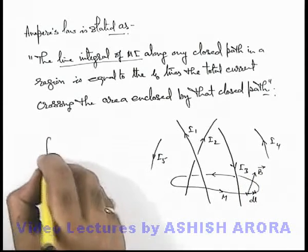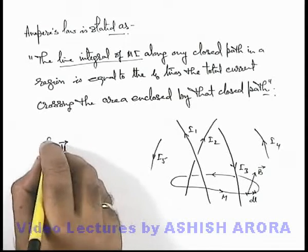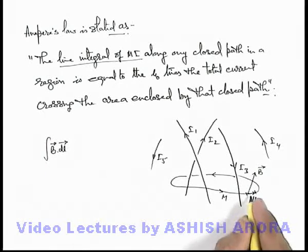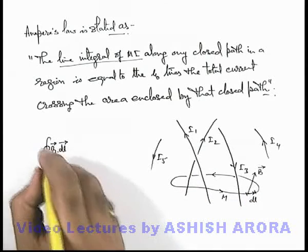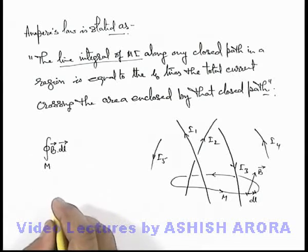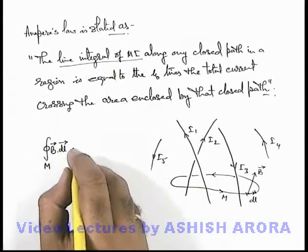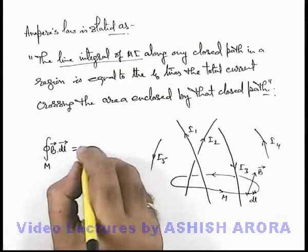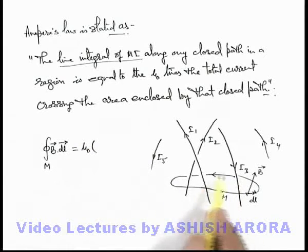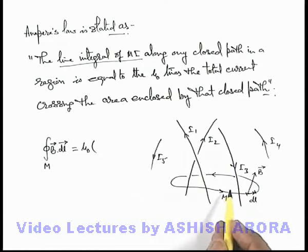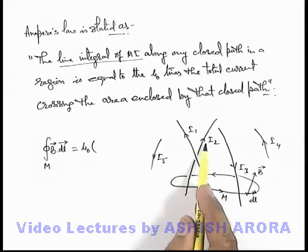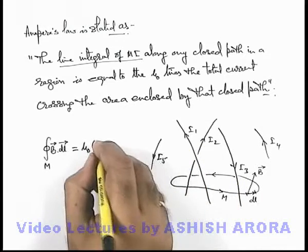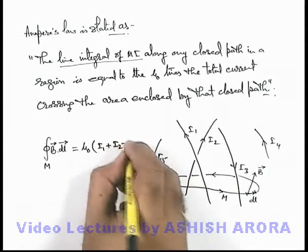Here we can write the integration of B dot dl, that is the line integral of magnetic induction at a point on this path M. If integrated for the closed path M, then according to Ampere's Law this line integral for the whole closed path is written as μ₀ times the total current enclosed by the area through which the current is passing. In this situation, the total current passing through this area will be i1, i2, and minus i3, so this can be written as i1 plus i2 minus i3.